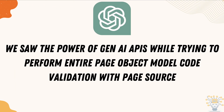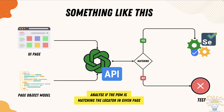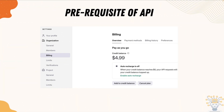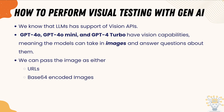We also saw the power of generative AI APIs while performing entire page object model code validation, where we were scraping the web page, passing it to the Gen AI, and it could resolve and give us the responses. We saw the API setup, how to get the API endpoints and the secret, and how to pass it in our C# .NET code. In this section we are going a level further to understand how we can perform visual testing with generative AI.